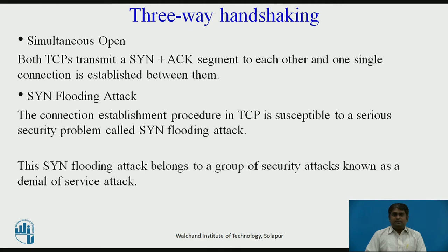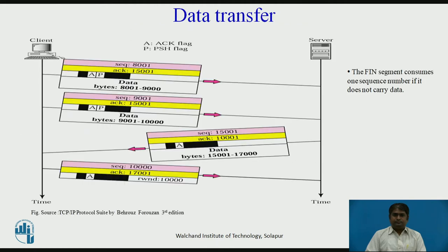Some implementations of TCP use strategies to alleviate the effect of SYN attacks. After connection is established, bi-directional data transfer can take place. The client and the server can send data and acknowledgments in both directions.